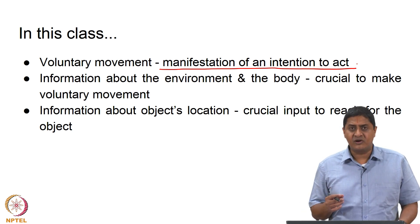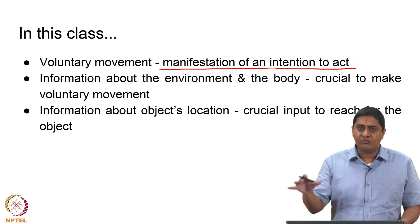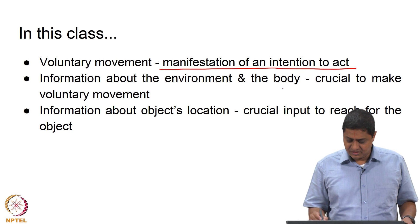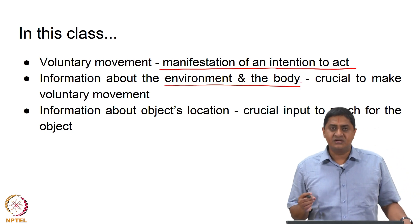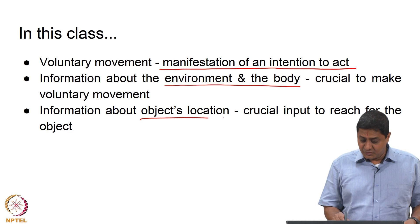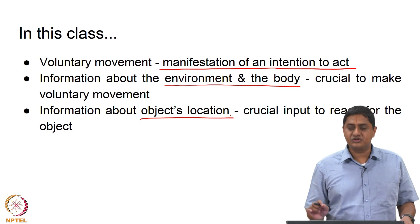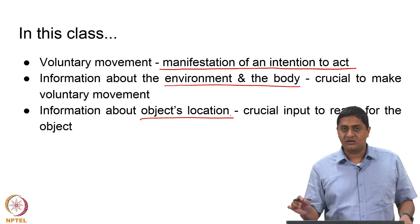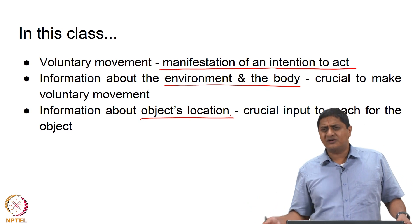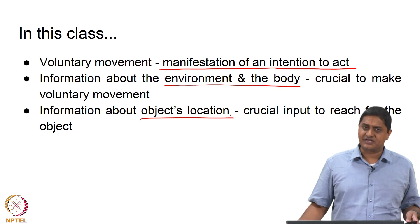Information about the environment and the body is crucial to make voluntary movement. When you are making a movement, you need to know where you are moving, the properties of the environment in which you are making the movement, and your own body state. Environment and body states are crucial to make specific and accurate movements. Also, the object's location is a crucial input to reach — if I have to pick up an object, the location and properties of that object, including its affordances, are important.